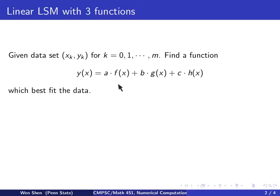So each of these functions multiply by a coefficient, so a times f, b times g, and c times h, and we add them up.